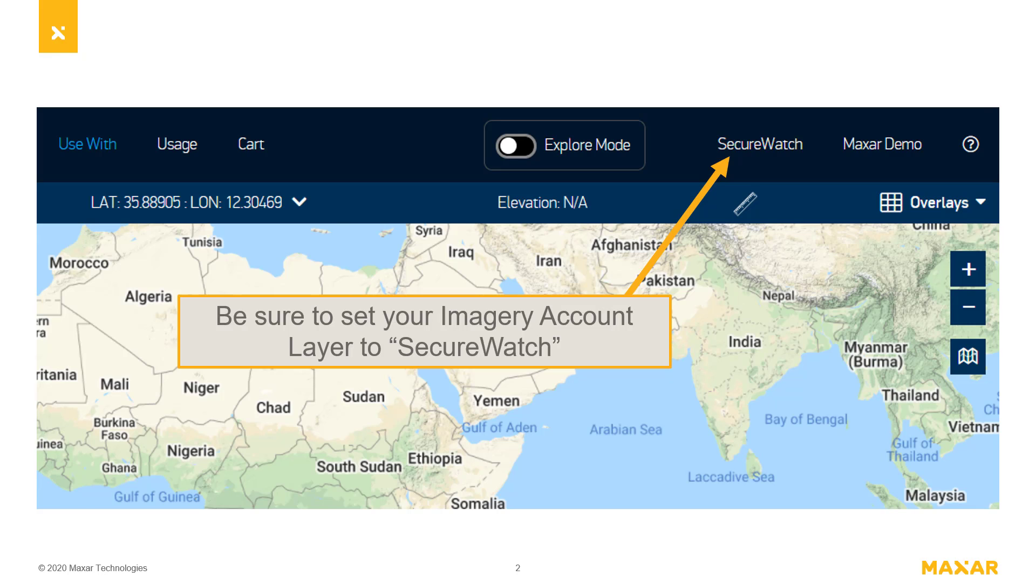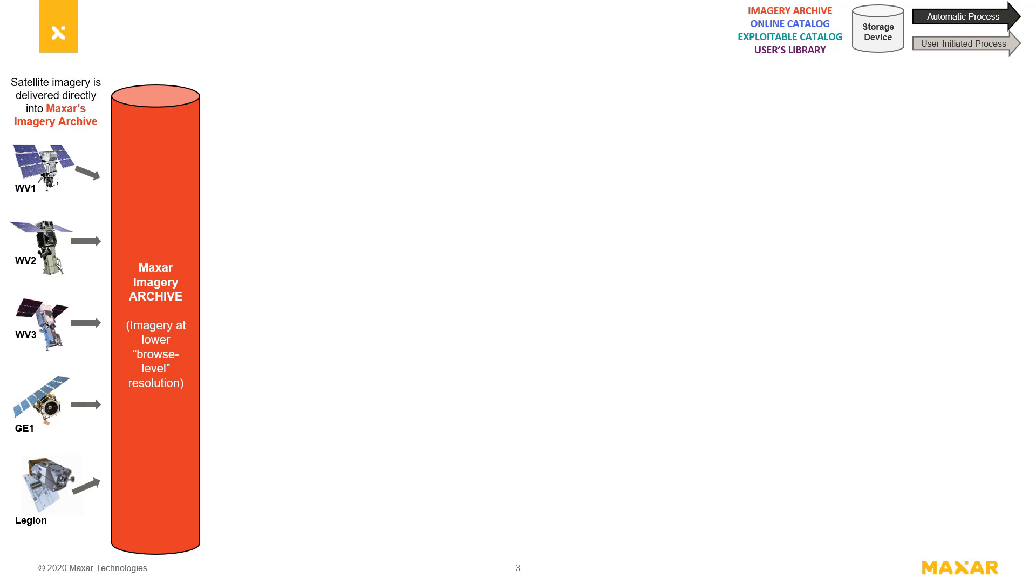The first thing to know is that every single image collected from Maxar's satellite constellation is immediately sent to and stored forever in the imagery archive.